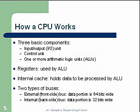How a CPU works. There are three basic components of the CPU: input/output, control units, and one or more arithmetic logic units, which is the ALU. Registers are used by the ALU. Internal cache holds data to be processed by the ALU, and is a very important performance factor. There are two types of buses: an internal frontside bus with a data portion 64 bits wide, and an internal or backside bus, usually 32 bits wide.